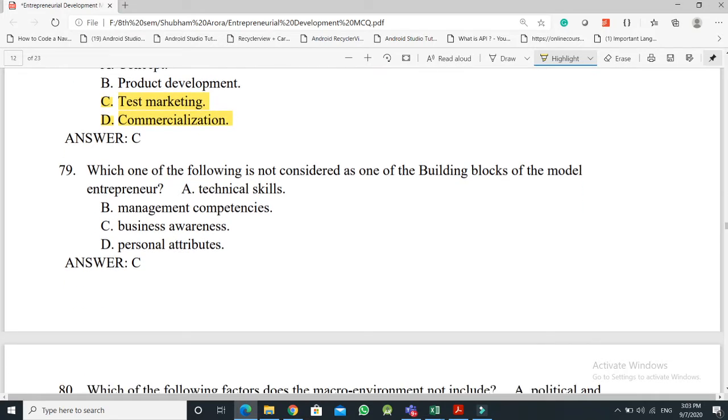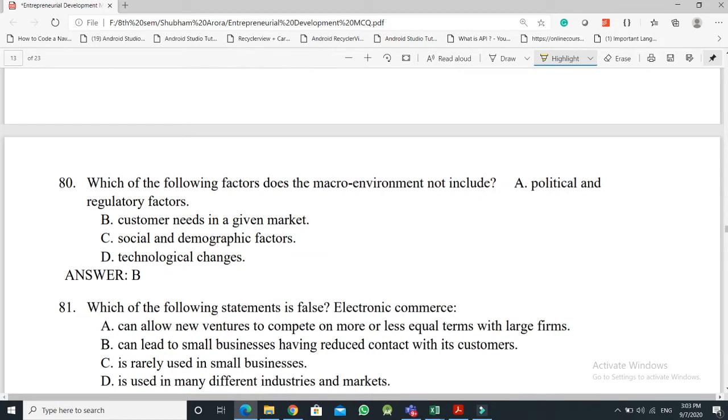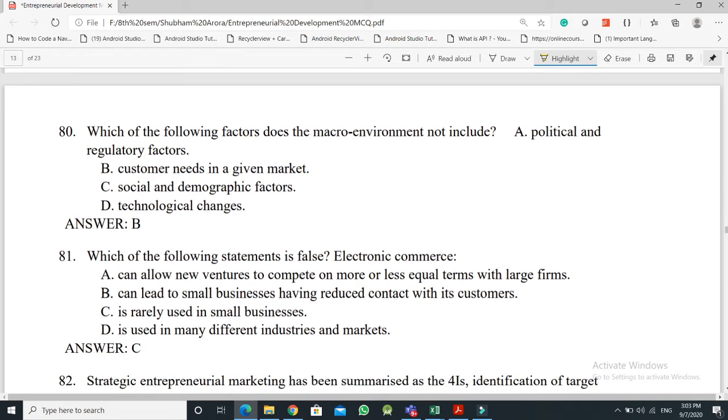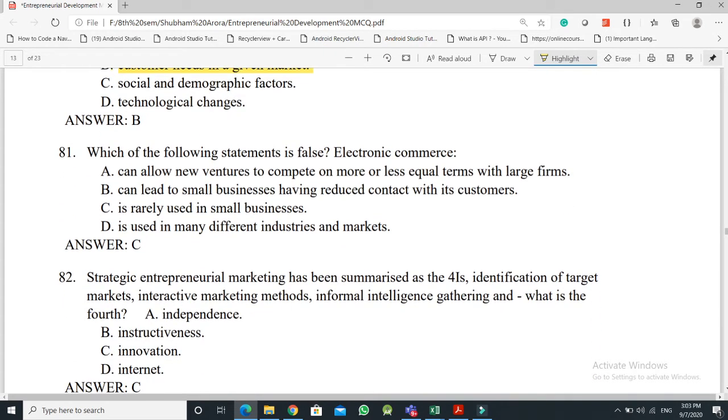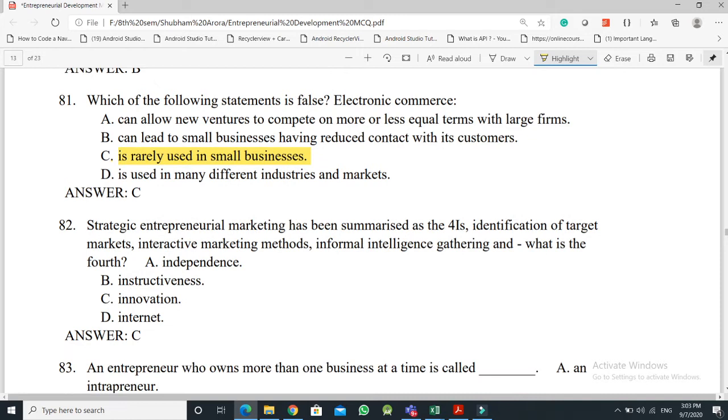Question No. 79: Which one of the following is not considered as one of the building blocks of the model entrepreneur - the answer is Option C, Business Awareness. Question No. 80: Which of the following factors does the macro environment not include - the answer is Option B, Customer needs in a given market. Question No. 81: Which of the following statements is false in electronic commerce - the answer is Option C, is rarely used in small businesses.